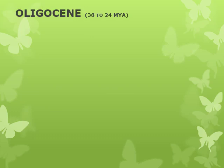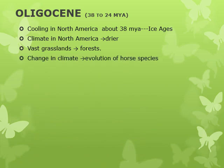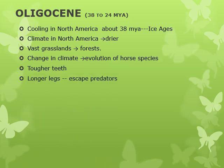In the Oligocene, a gradual long-term cooling trend began in North America about 38 million years ago, which lasted through the Pleistocene ice ages. The climate in North America gradually became drier and vast grasslands replaced the forests. This change in climate was a critical element in the evolution of horse species because they were the first animals to take advantage of the new habitat and food source. New species began to develop tougher teeth to grind up the grasses and longer legs, as it became more important to run and escape from predators.